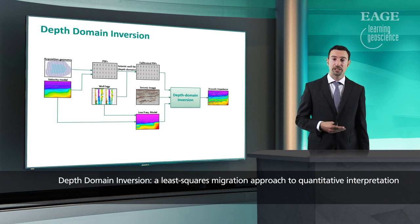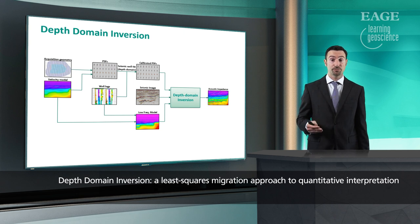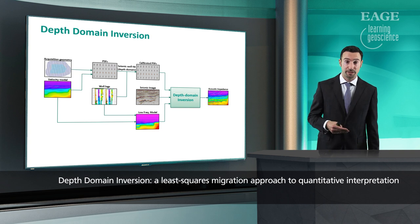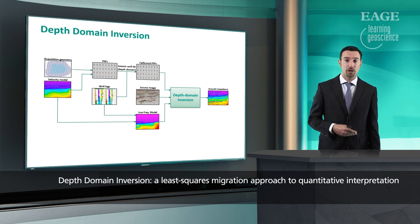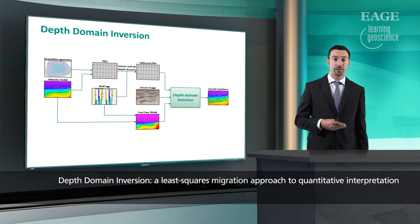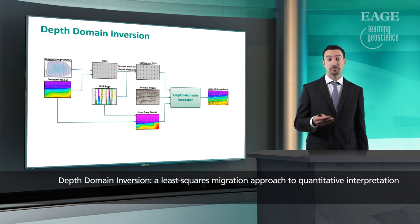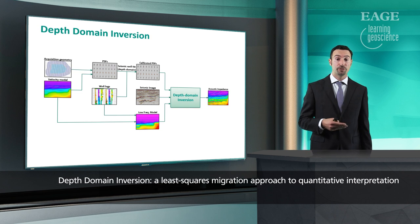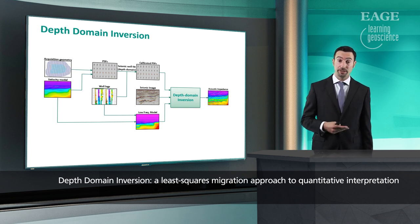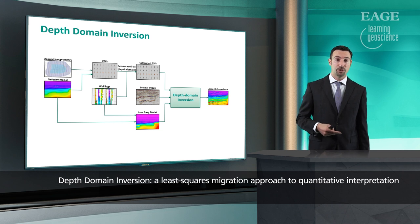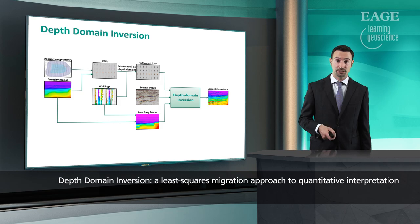The ability to calibrate point-spread functions to the available well data has a lot of advantages. First of all, we can make sure that we are calibrating the spectrum of the point-spread functions to the spectrum of the reflectivity, and this ensures optimal convolution, which is going to increase the frequency content of the least-squares migrated image, and reduce the risk of ringing or loss of low frequency content. Finally, the ability to constrain the inversion to a realistic background model also helps the inversion to converge faster.